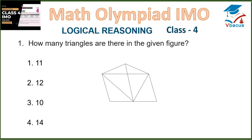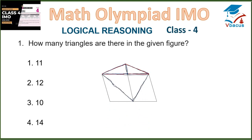Logical reasoning. Question 1: How many triangles are there in the given figure? Let us count: 1, 2, 3, 4, 5, 6, 7, 8, 9, 10. So there are 10 triangles. Option 3 is the correct answer.